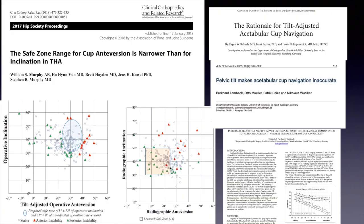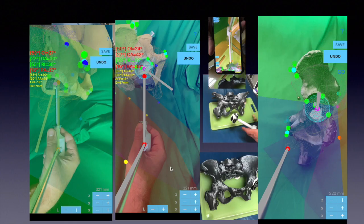Orthopedic surgeons now begin to understand the importance of pelvic tilt, and hip societies have redefined the safe zone of inclination and anteversion for cup placement, taking into account pelvic tilt and adjusting according to pelvic tilt angle. The real pelvic tilt of the patient's pelvis during the operation is thereby accounted for.